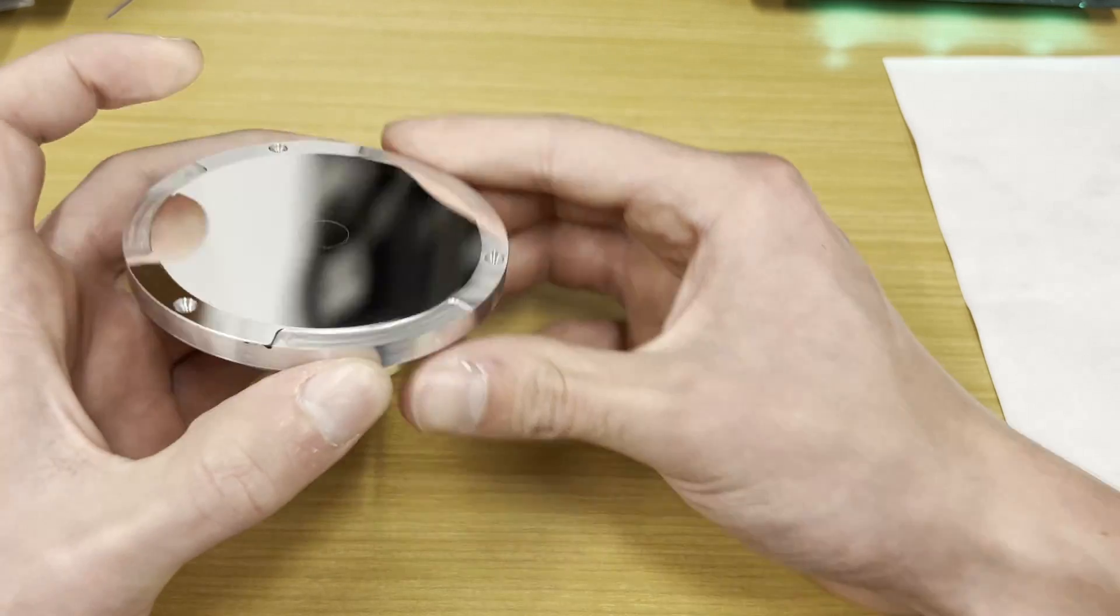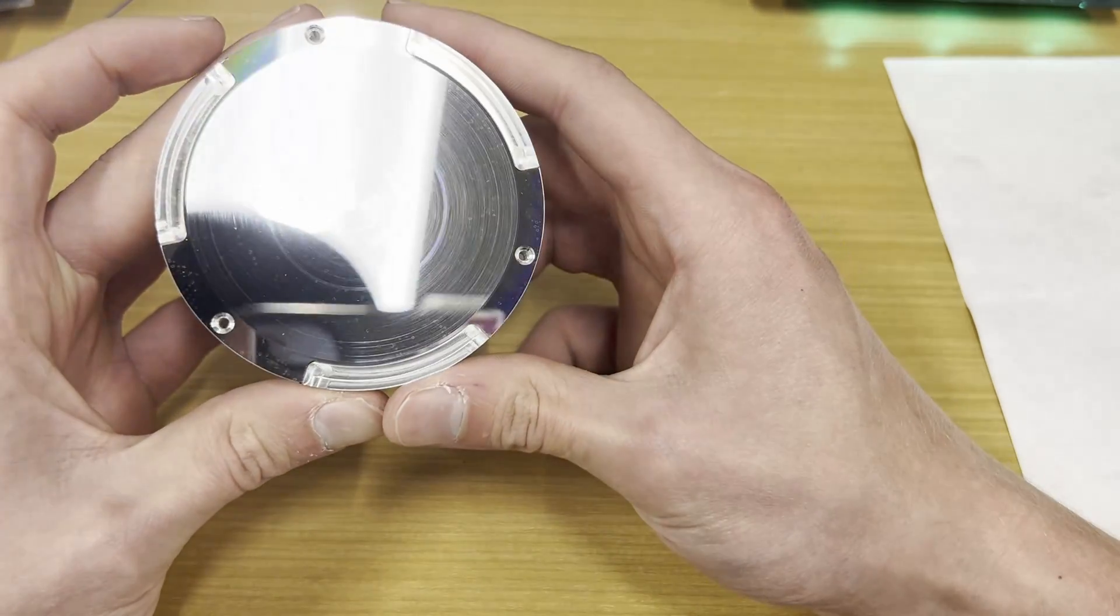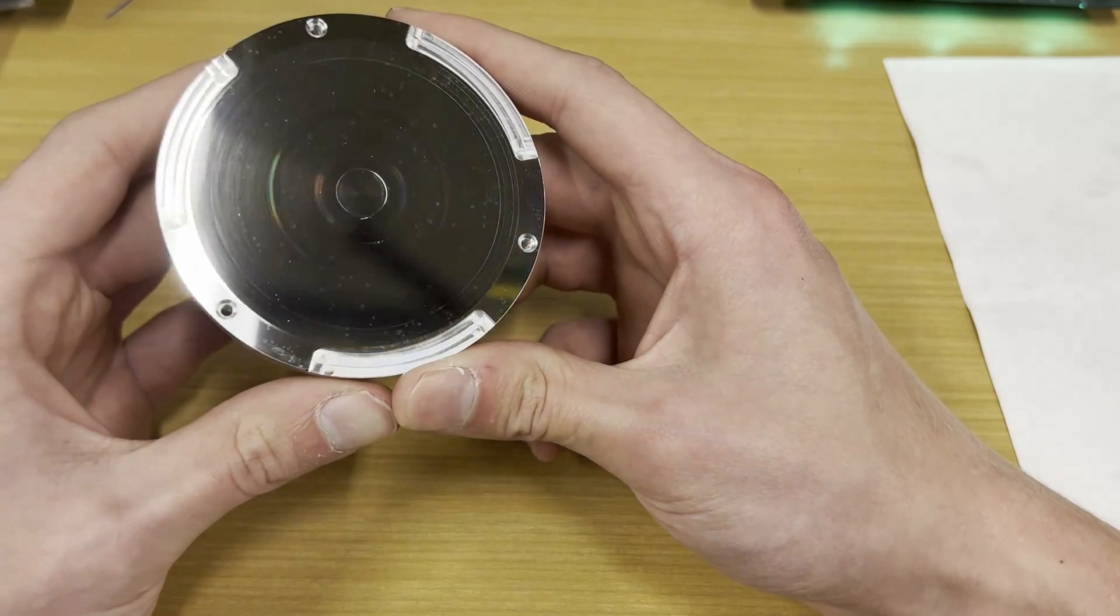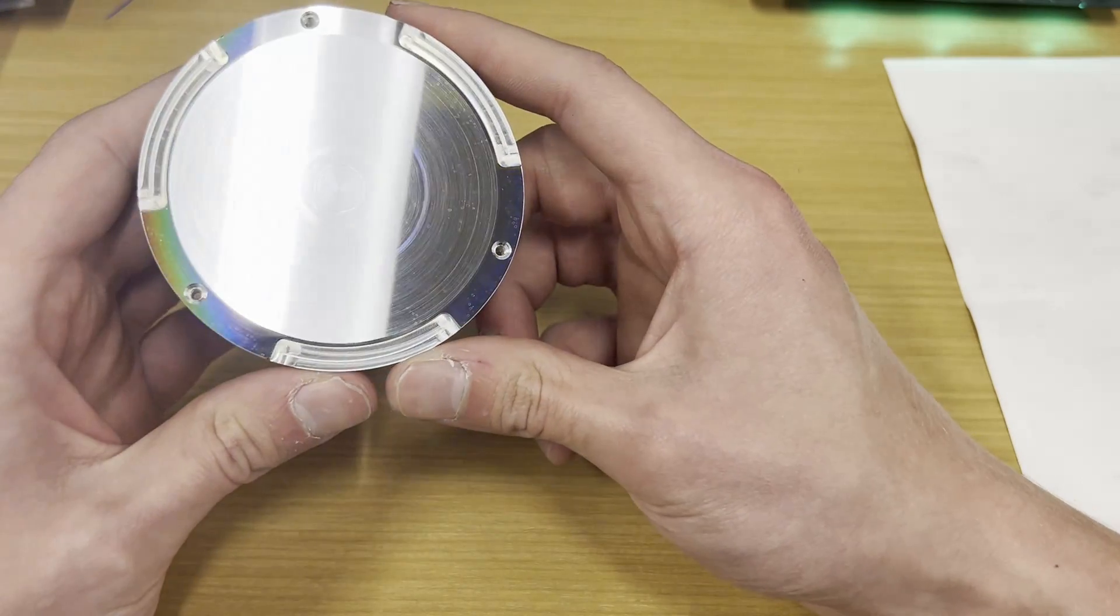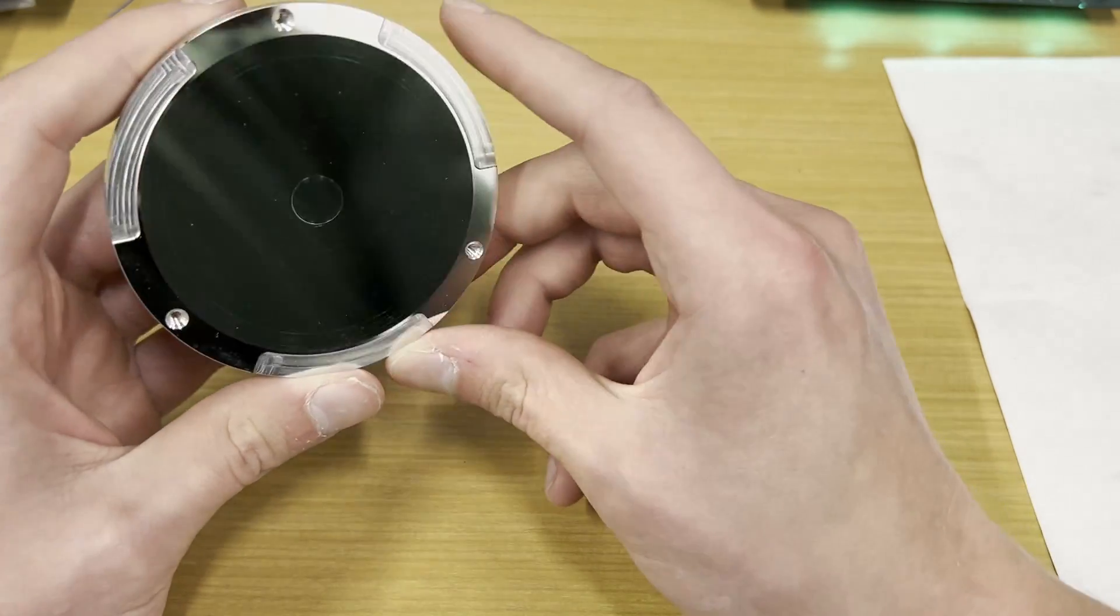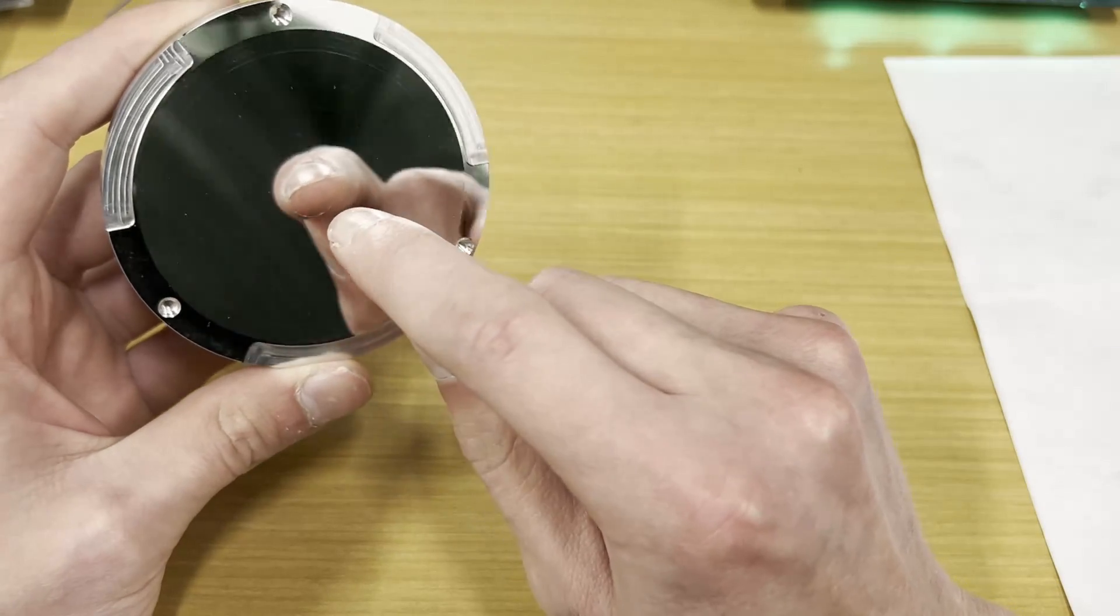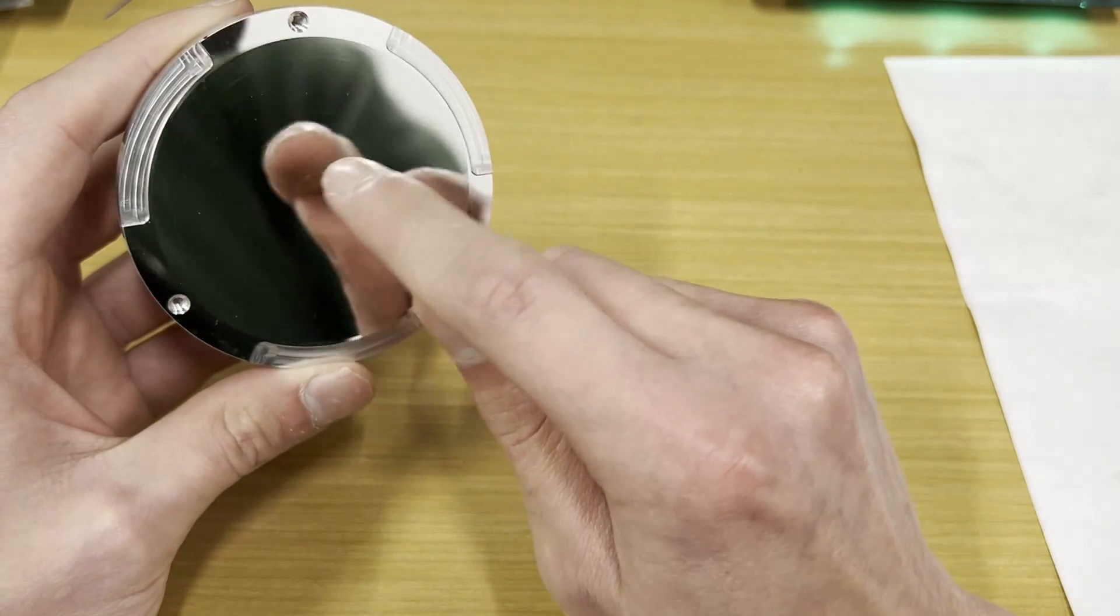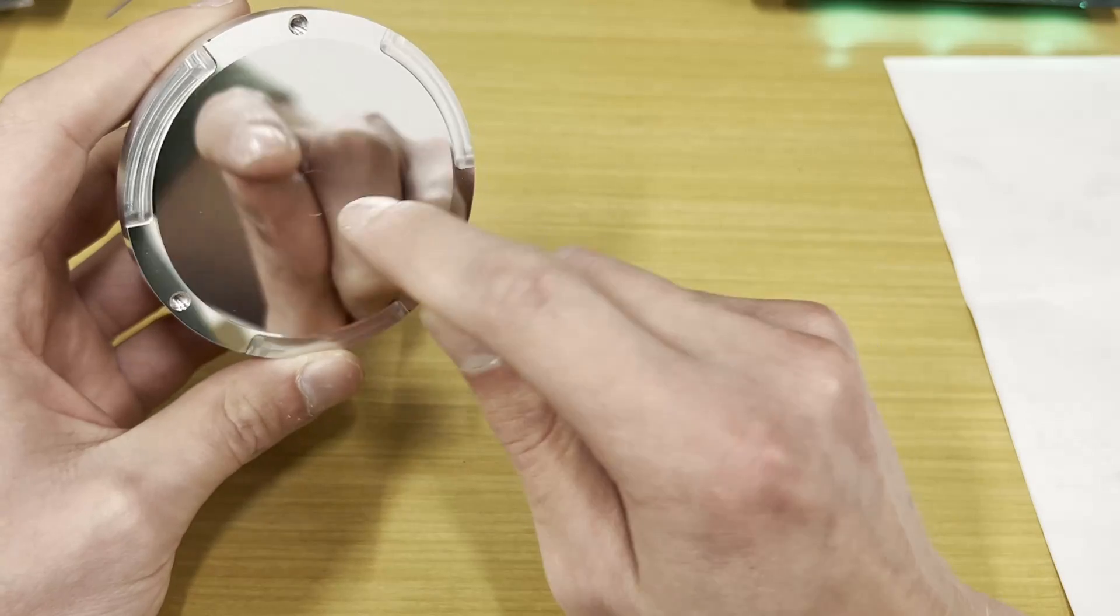But when I shine it at the light, you can see all the problems that arise. Not so nice looking anymore. The main thing to note is this ring here in the middle. And I'm still trying to figure out what exactly caused that.